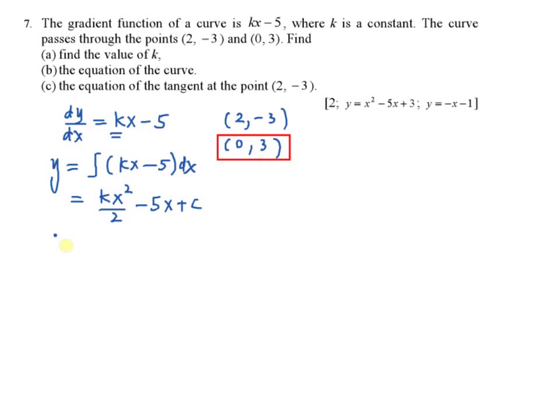So x equal to 0, y equal to 3, you will have c equal to 3. So therefore now, your y equal to kx squared over 2 minus 5x plus 3. You can see here, just now you have two unknowns, k and c. Now you eliminate one of the unknowns because you know you have c equal to 3.